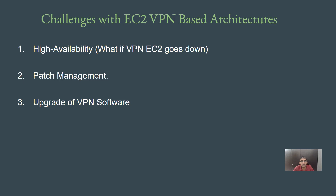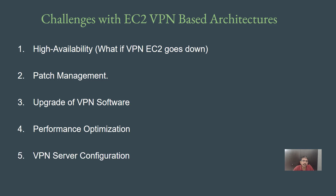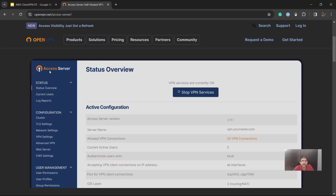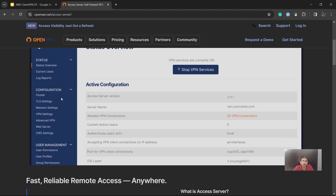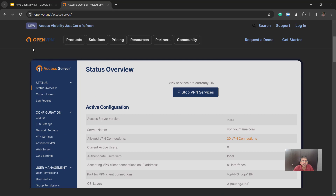If you are managing an EC2-based VPN for your organization, the fourth challenge is performance optimization. If VPN is slow, users will come to you. Monitoring not only the operating system but also VPN-related connections is quite challenging. The fifth part is the entire VPN server configuration itself — when you install the OpenVPN Access Server, there are so many options available. You need to be familiar with all of them and understand the tuning aspects so that you can use it optimally.